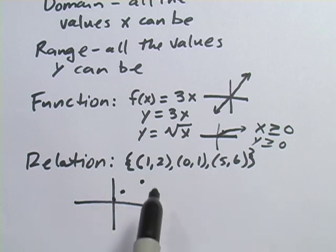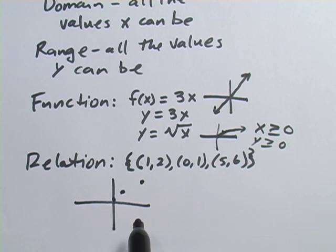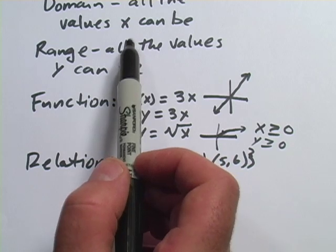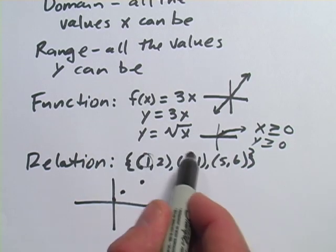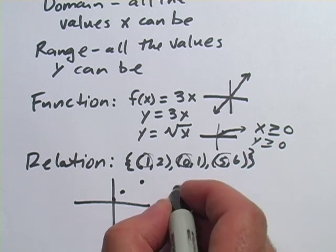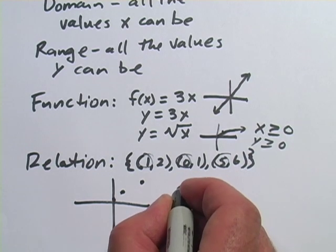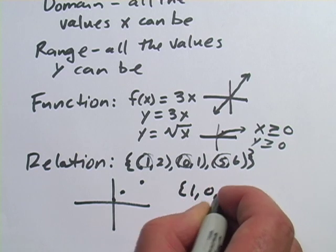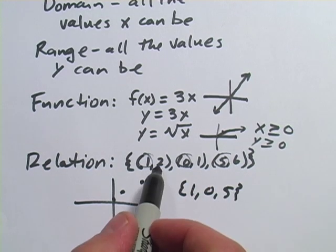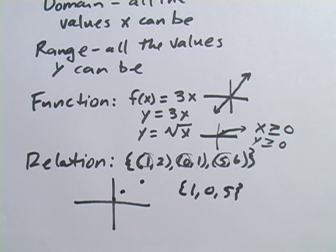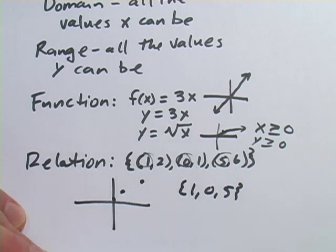You can still figure out the domain and range for a relation — in fact, it's easier. The domain is everything x can be, so it's just the x-values from each point. If asked for the domain of this relation, you'd make a set: {1, 0, 5}. And if asked for the range, it would be the y-values: {2, 1, 6}. That's a brief review of domain and range for functions and relations.